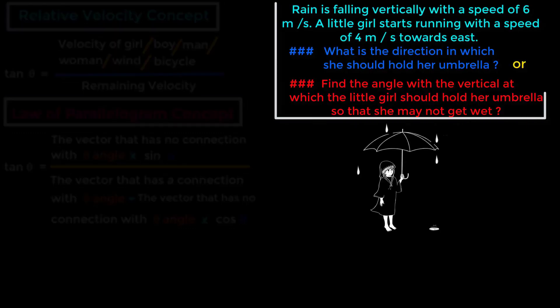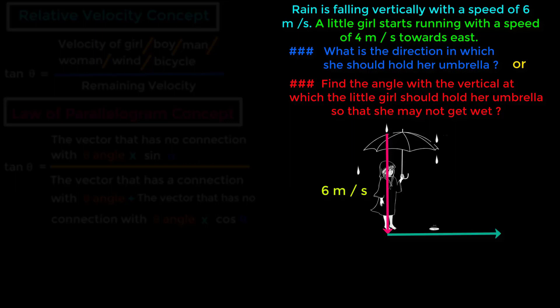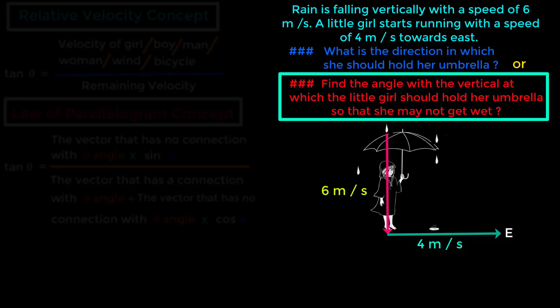Now look at this question. Rain is falling vertically with a speed of 6 meters per second. A little girl starts running with a speed of 4 meters per second towards east. What is the direction in which she should hold her umbrella? Or: find the angle with the vertical at which the little girl should hold her umbrella so that she may not get wet.